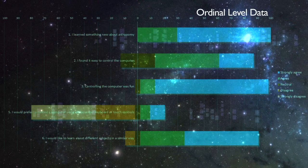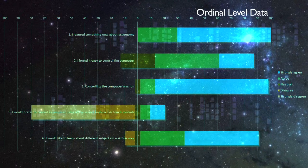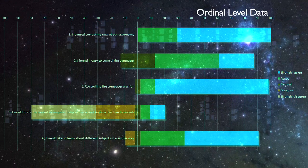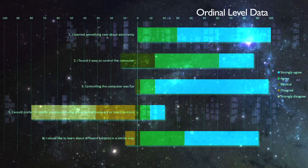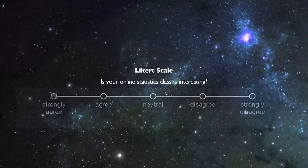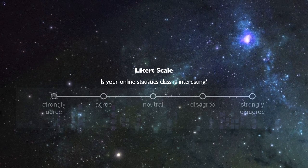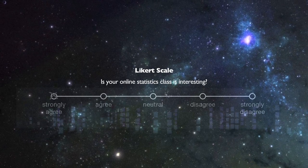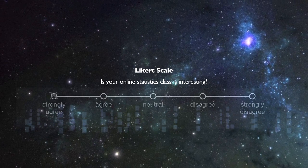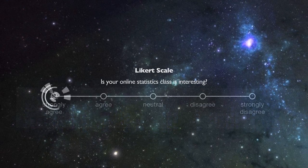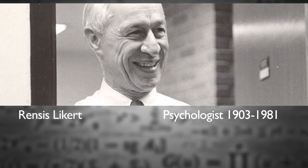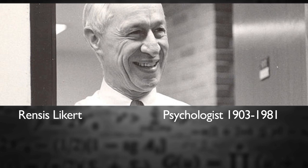Ordinal level data is similar to nominal data because it's categorical, but this data can be ordered, like surveys you complete with a Likert scale. For example, the question might ask: is your online statistics class interesting? A Likert scale, named after psychologist Rensis Likert, is a rating scale commonly used in surveys and questionnaires.